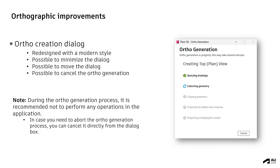The AutoCAD dialog is redesigned with a modern style. Look at the image on the right to see how it looks now. The most important improvements are the following three: it is now possible to minimize the dialog, it is possible to move the dialog — remember, formerly it was always in the front in the middle of your screen until the auto generation was finished, even if you were working in a different application like Word. Now it is possible to minimize and move it, and it is also possible to cancel the auto generation.